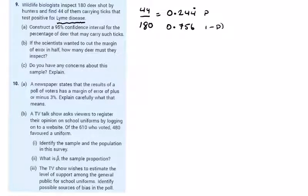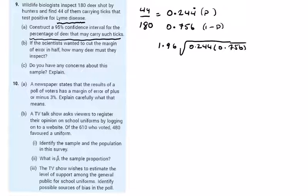So I've got p and 1 minus p for my proportion of the survey. Construct a 95% confidence interval for the percentage of deer that carry such ticks. So 1.96, the error here will be 1.96 by 0.244 by 0.756 divided by the size of the sample which in this case is 180.